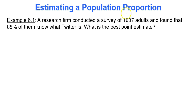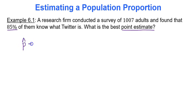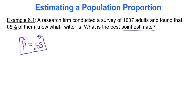A research firm conducted a survey of 1,007 adults and found that 85% of them know what Twitter is. What is the best point estimate? The best point estimate is your sample proportion, p-hat. What proportion of adults in your sample know what Twitter is? 85%. So we write 0.85. That's our point estimate — the starting point for our interval used to estimate the true population proportion.